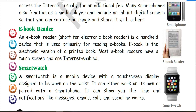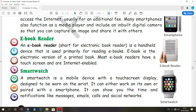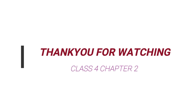A smart watch is a mobile device with a touch screen display, designed to be worn on a wrist. It can either work on its own or be paired with a smartphone. It can show you the time and notifications like messages, email, calls and social network updates such as Facebook and WhatsApp. Thank you.